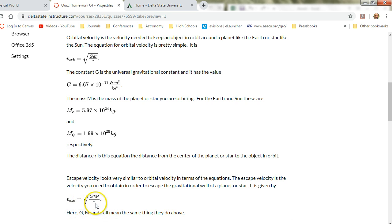It's the square root of 2GM over r, and all these symbols here mean exactly the same thing they do up here. G is the universal gravitational constant, M is the mass of whatever planet you're going around, and then r is your distance from the center of that.